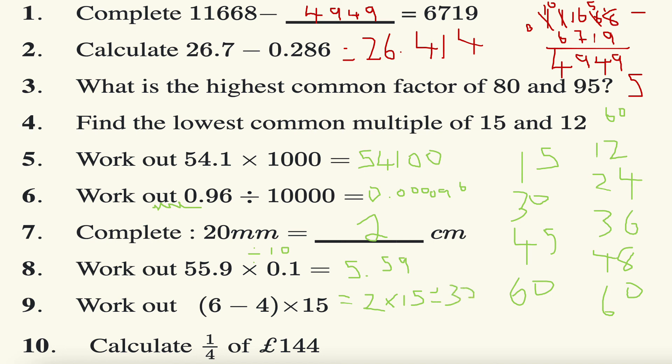The last question for today's video: calculate a quarter of 144 pounds. Divide by the bottom, times by the top. 144 divided by four is 36, 36 times one is also 36, so a quarter of 144 pounds is indeed 36 pounds.